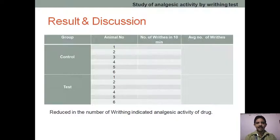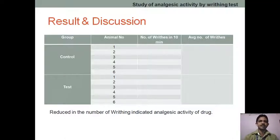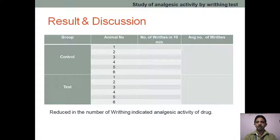The control and test groups are there, animal number is there, and the number of writhes in 10 or 15 minutes for both the test and control group. You have to find the average number of writhings. With this reading, we can see the activity of drugs like indomethacin, aspirin, diclofenac — all peripherally acting agents — and find the analgesic activity of those drugs.